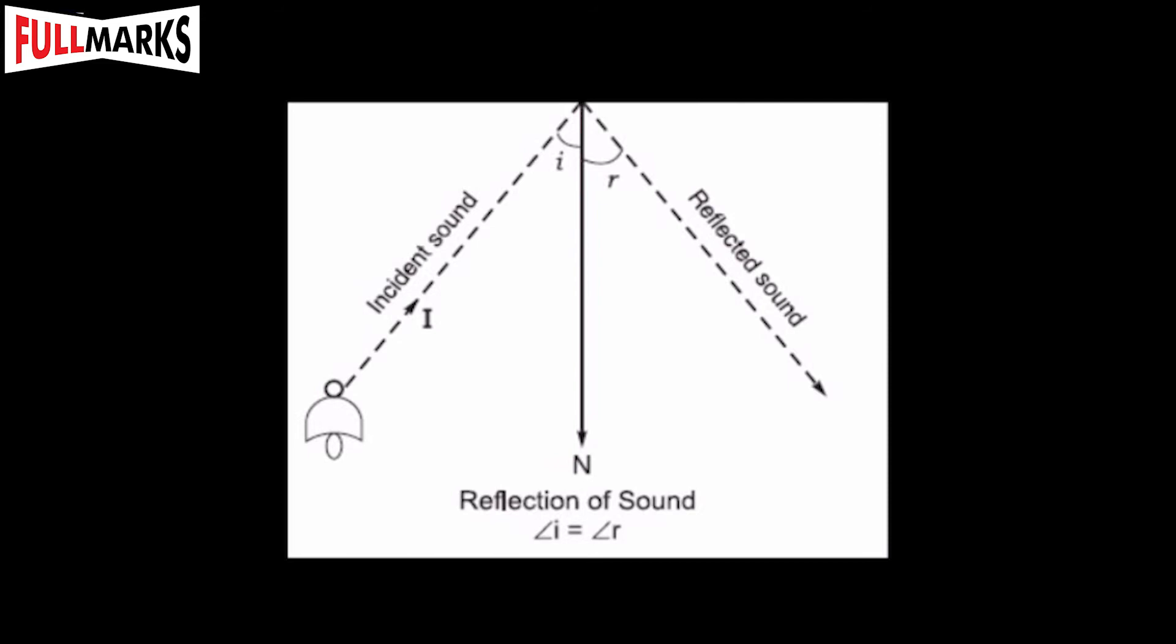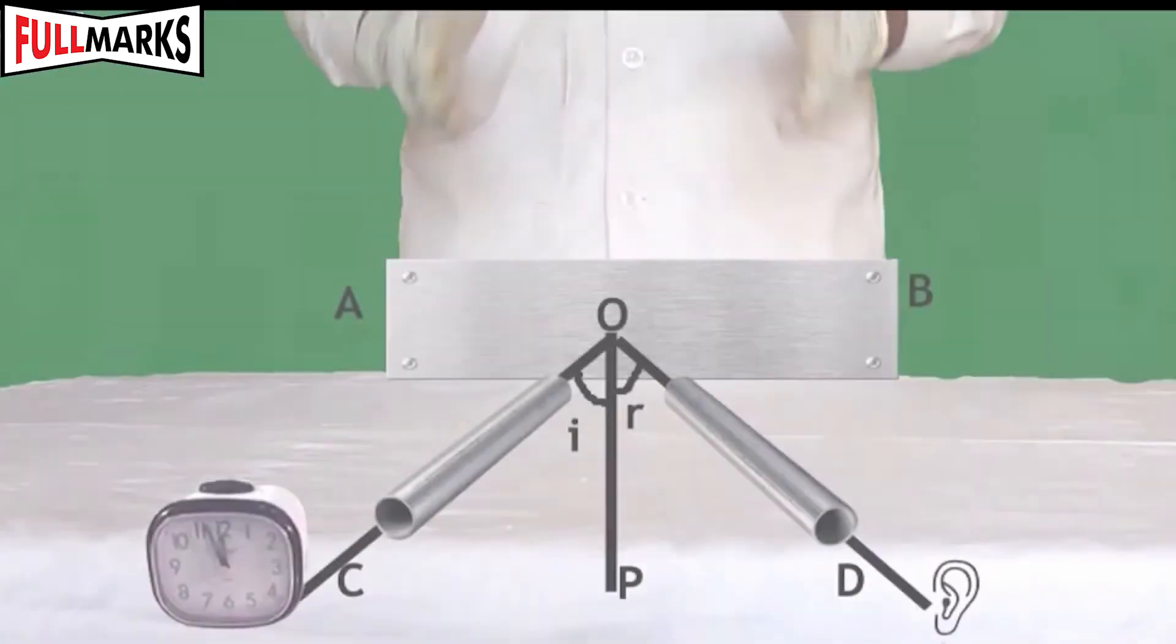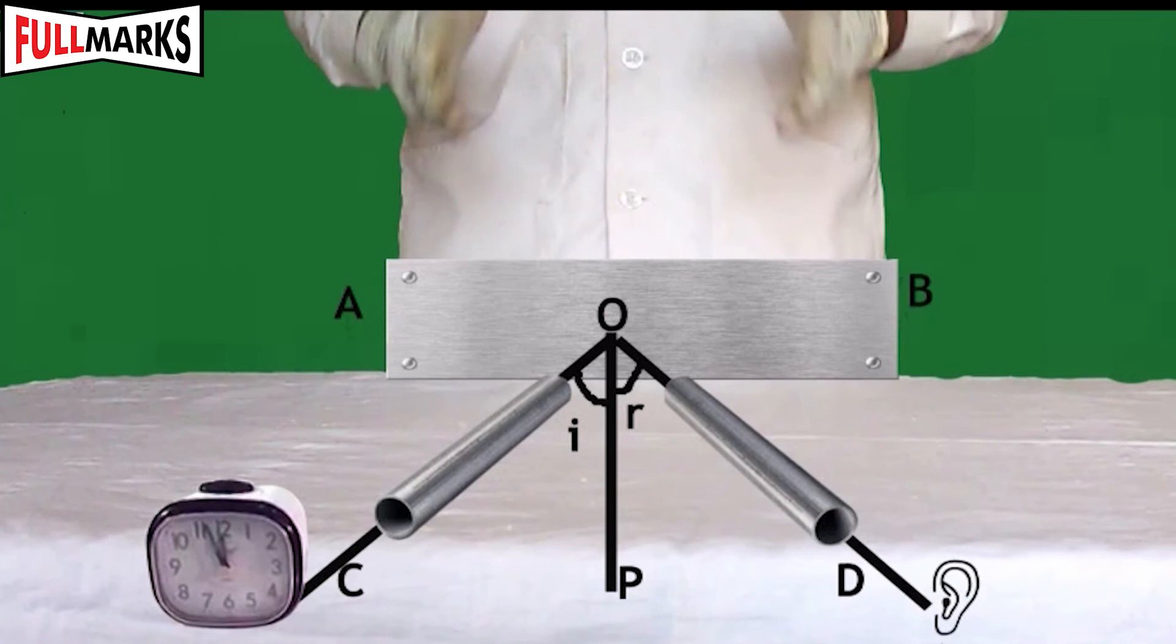Procedure: Fix the white sheet on drawing board with thumb pins. Draw a line AB to place the metal plate as reflecting surface with the help of metal stand and draw normal OP to this line as shown in the figure.